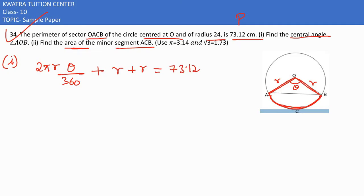Now let's put the values which we know. Pi is 3.14 and r is 24, theta would be as it is. Then on the right hand side you have 73.12 cm.